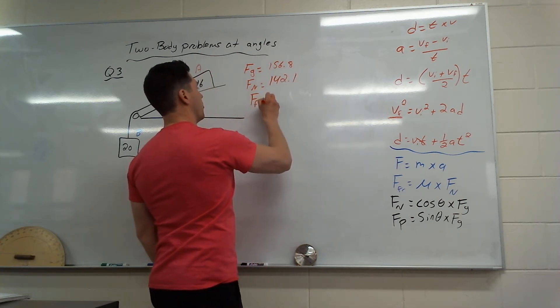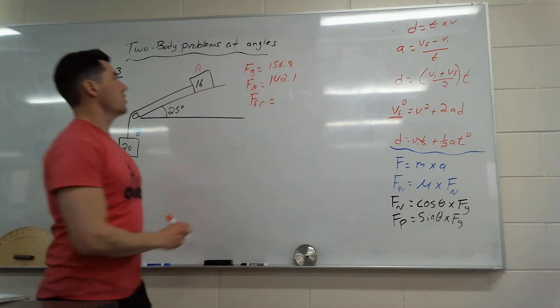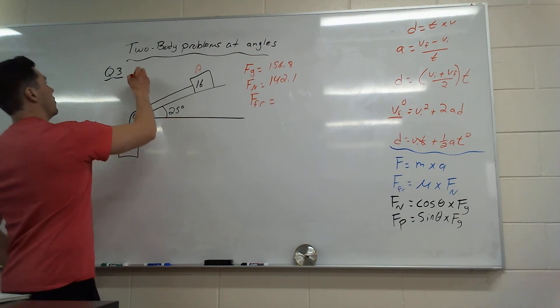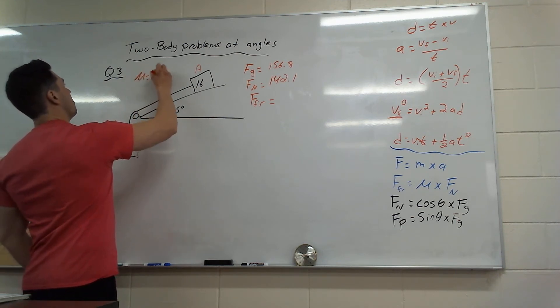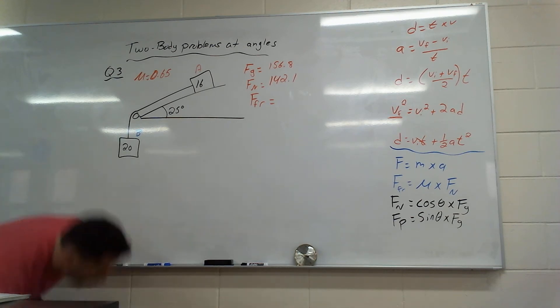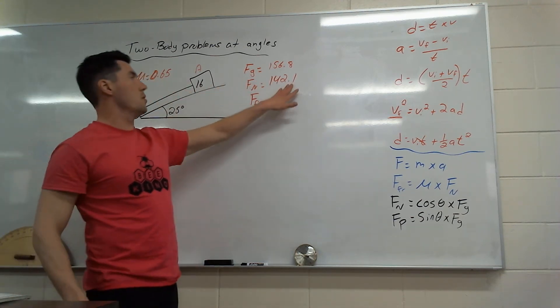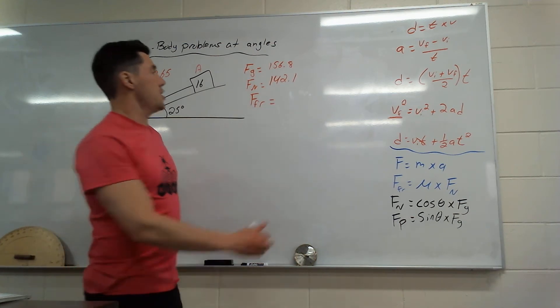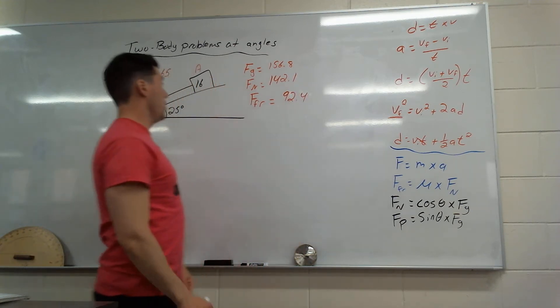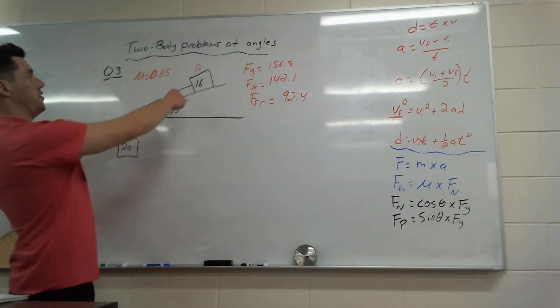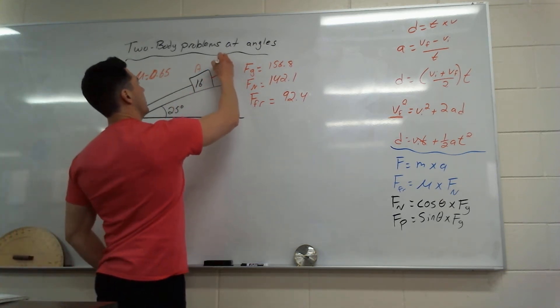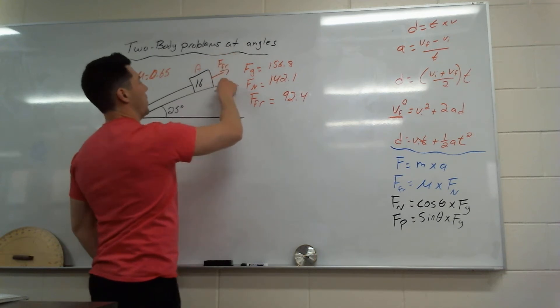And then with this, we can get force of friction. Force of friction is going to be that 142, because we use force normal times mu. Our mu was, for this question, 0.65. Now we can use that 0.65 times force normal to get our force of friction, which is 92.4. We don't technically know which way that's going, but just looking at this, I'm pretty sure this is sliding this way. It's the only way to slide, so pretty sure force of friction is going that way with 92.4.